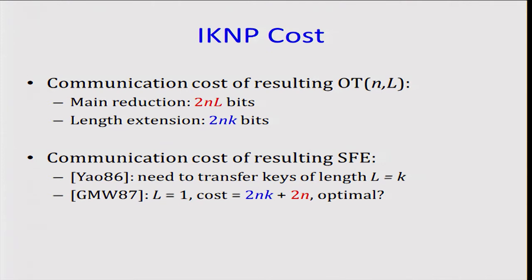The IKNP protocol is very simple and elegant and also very efficient. If you look at the communication cost of N instances of OT, where the sender inputs are of length L, then in the main reduction which we just saw before is just hashing the XI0 and XI1. So this will be 2NL bits, whereas the length extension which used the PRG would be 2NK bits.